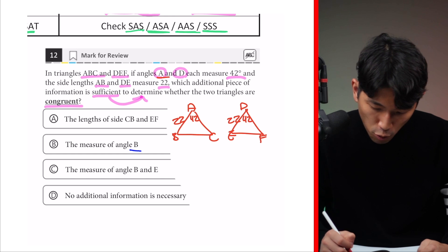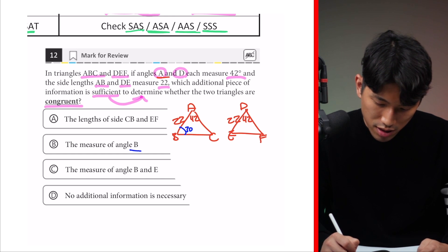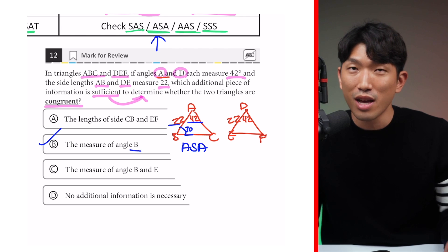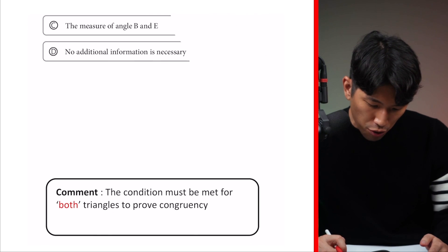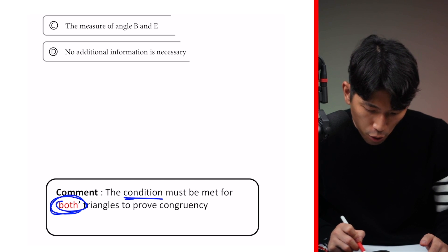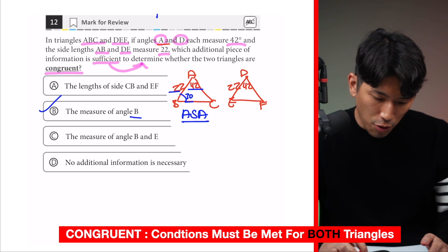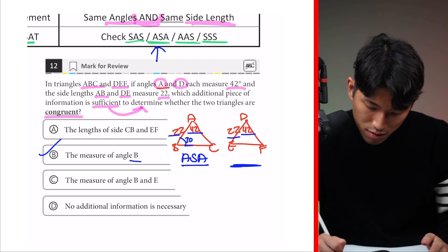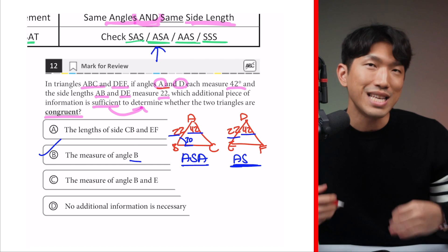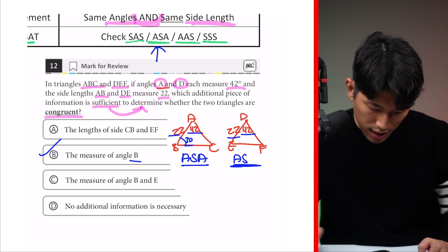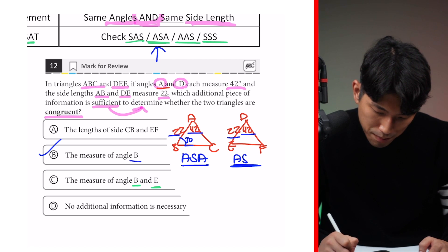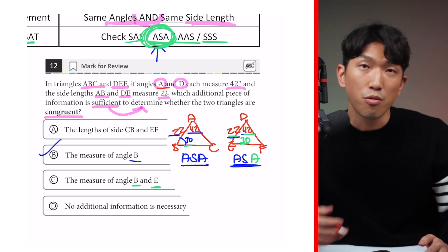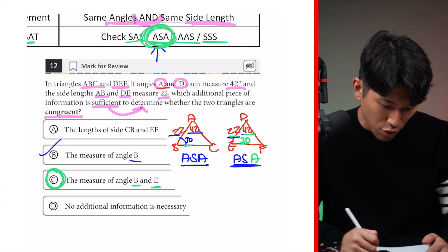For choice B, knowing the measure of angle B alone gives us angle-side-angle for the first triangle, but for the second triangle we only have angle and side — we don't know the third piece. That's not enough to prove congruency for both triangles, so choice B is out. For choice C, knowing both angle B and angle E — say, 30 degrees each — gives us angle-side-angle for both triangles. That satisfies the ASA condition for both triangles, so our answer is choice C.